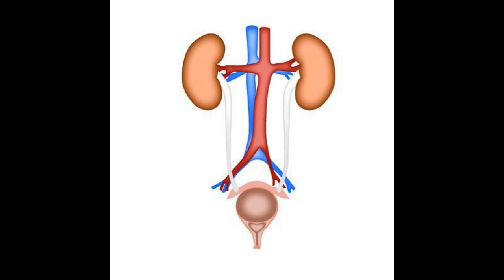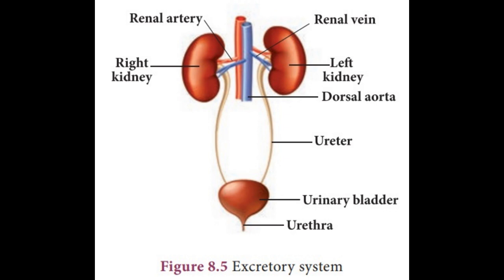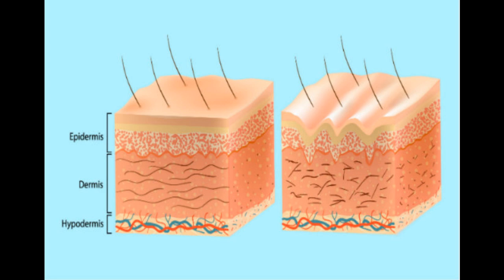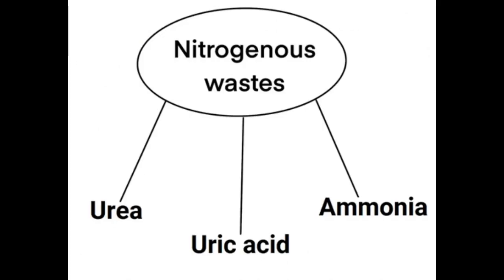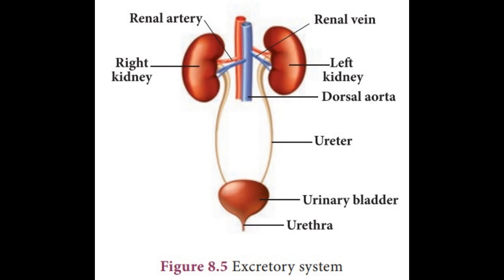Multicellular organisms have specialized organs for the process of excretion. In humans, there is a well-developed excretory system. Several organs excrete various wastes like gaseous waste, nitrogenous waste, excess salts, excessive vitamins, pigments formed by the breakdown of red blood cells, and even water vapor — from lungs, kidneys, skin, liver, etc. Out of all these wastes, nitrogenous wastes are very toxic. These wastes are excreted through kidneys, and the system which excretes these nitrogenous wastes is called the excretory system.